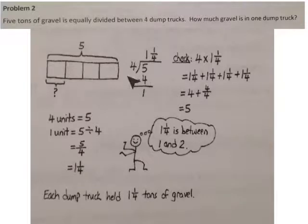When we do five divided by four, we get an answer of one and one-fourth. Each dump truck held one and one-fourth tons of gravel.